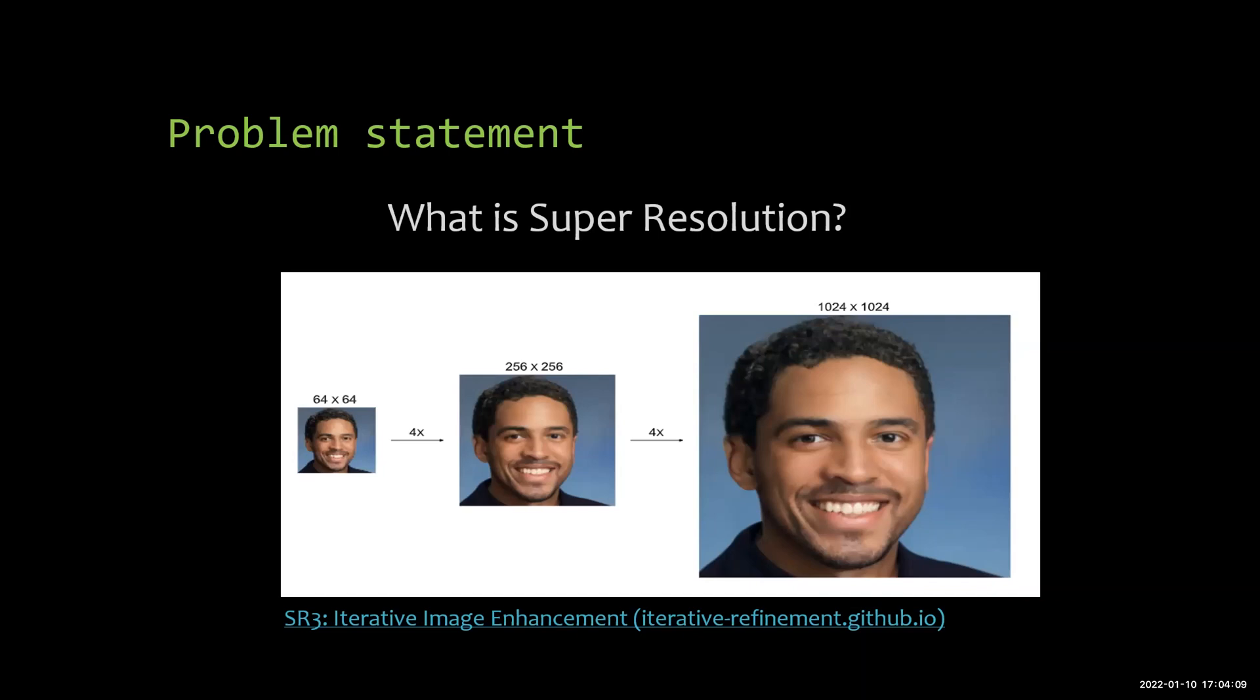Using the traditional image processing techniques still causes loss because they depend on the existing values to come up with the new ones. Unlike the deep learning approaches that can hallucinate new values by training on enough data or a big enough dataset.